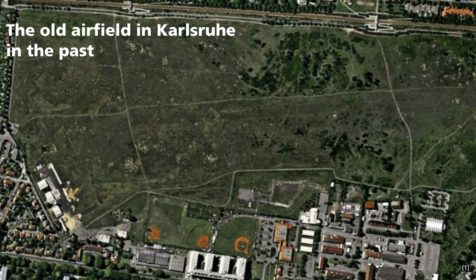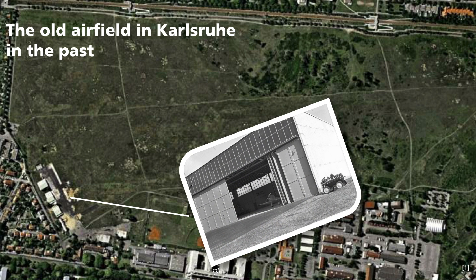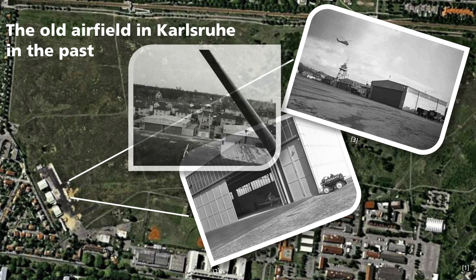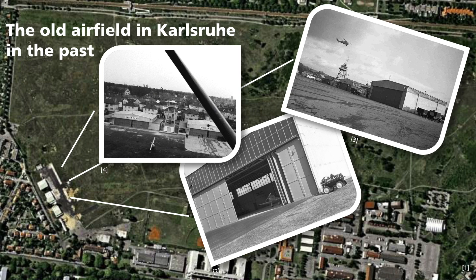The old airfield in Karlsruhe was used by the American military until 1993. Old photographs show the buildings with aircraft hangars and a control tower.